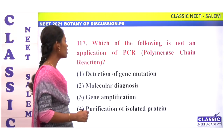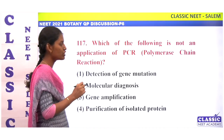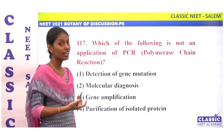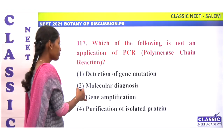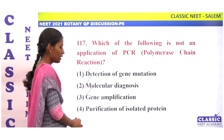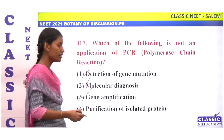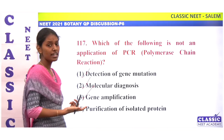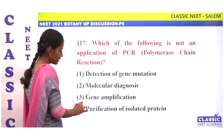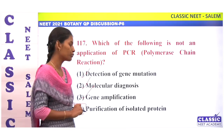Which of the following is not an application of PCR? Diagnosis of gene mutation — useful for identifying genetic disorders. Molecular diagnosis is also correct. Purification of isolated protein — PCR is not used for this. The question asks which is NOT a function. We choose option 4: purification of isolated protein.